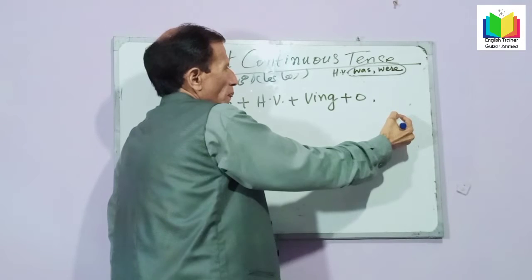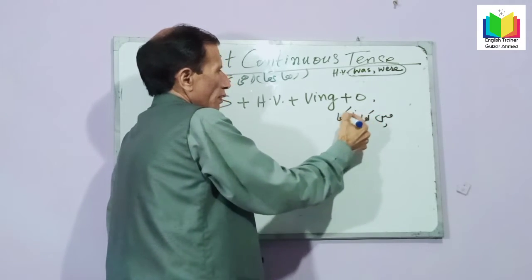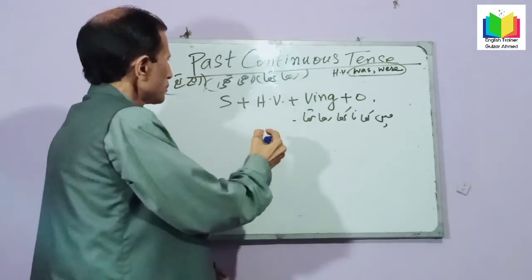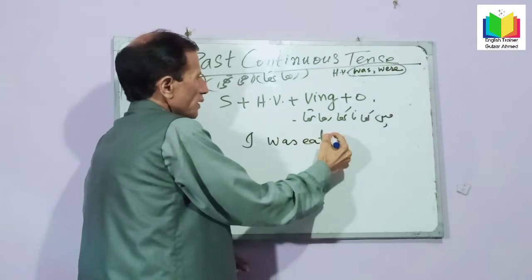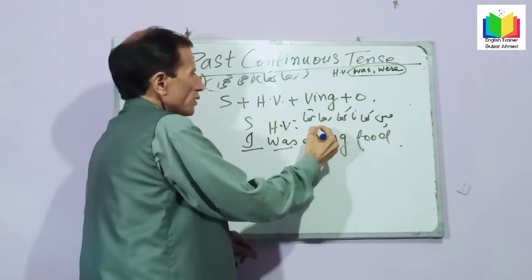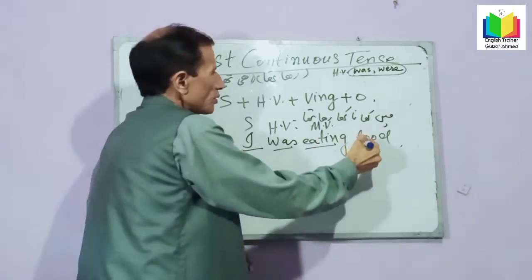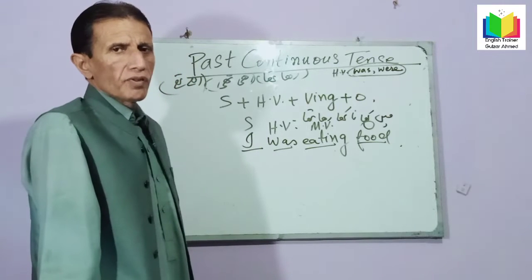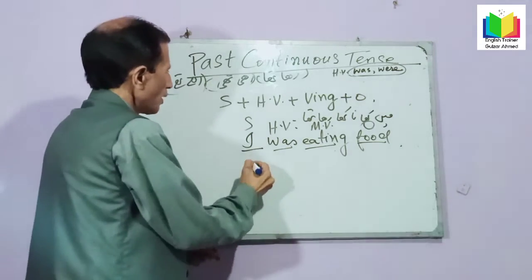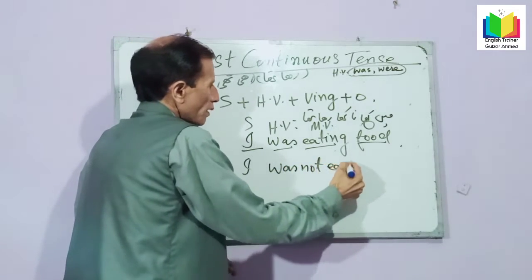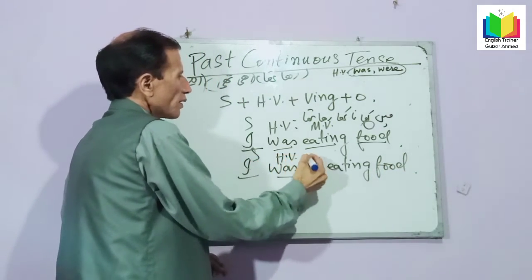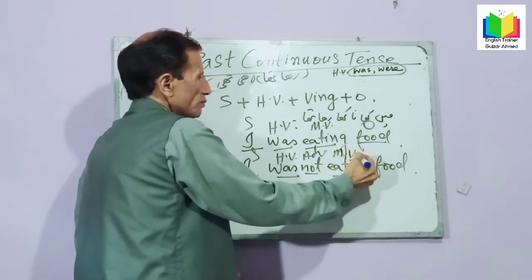For example, 'man khana khaa raha tha' — I was eating food. 'I' is the subject, 'was' is the helping verb, 'eating' is the main verb plus -ing, and 'food' is the object. If we want to make it negative, we will write 'not' after 'was': I was not eating food.